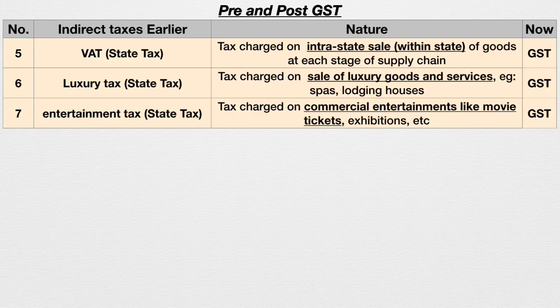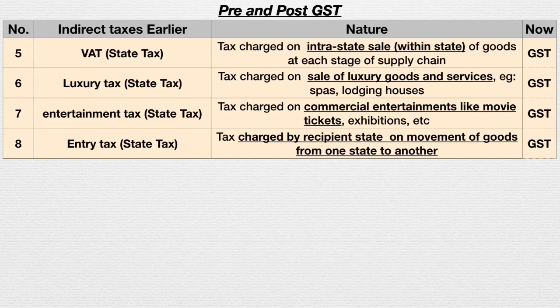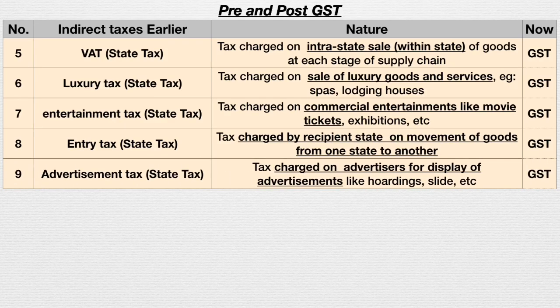Seventh is entertainment tax — a state tax charged on commercial entertainments like movie tickets, exhibitions, etc. This tax has now got replaced with GST. Eighth is entry tax, which was a tax charged by the recipient state on movement of goods from one state to another. The recipient state is the state to which the goods are moved, and the state government of that recipient state would charge the entry tax. Now entry tax has been replaced by GST.